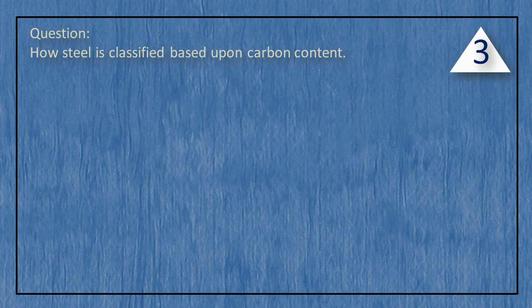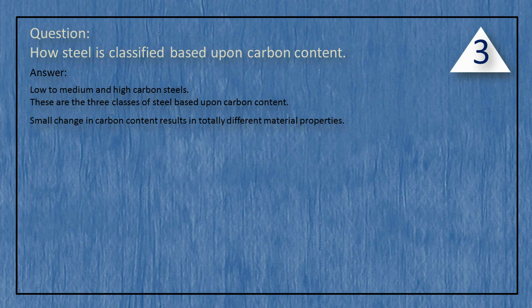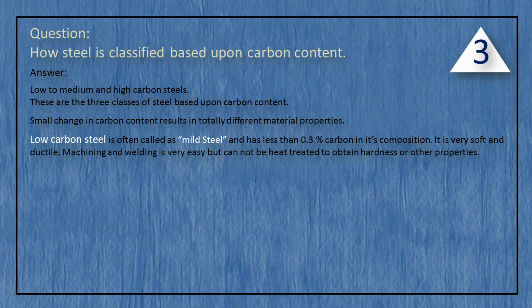How is steel classified based upon carbon content? These are the three classes of steel based upon carbon content. A small change in carbon content results in totally different material properties. Low carbon steel is often called mild steel and has less than 0.3% carbon. It is very soft and ductile.